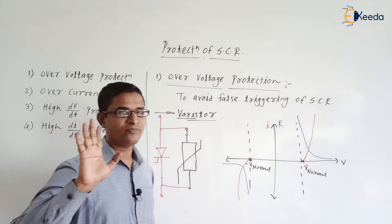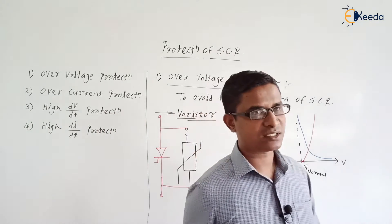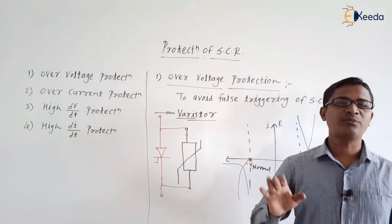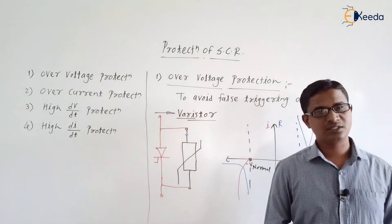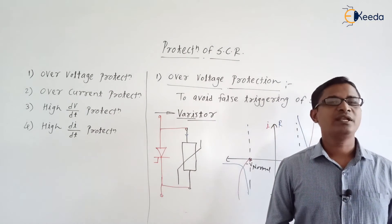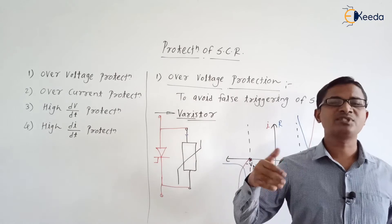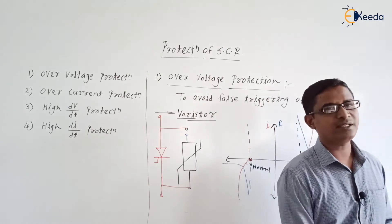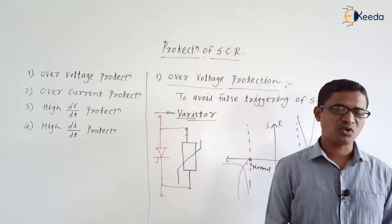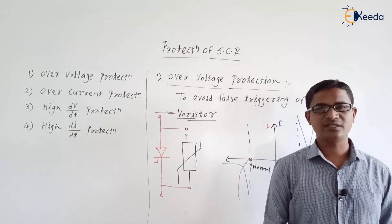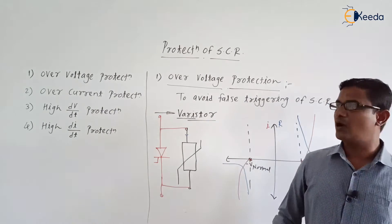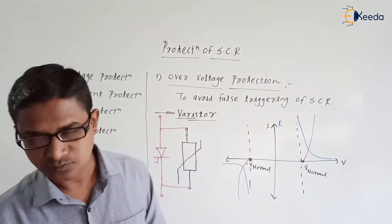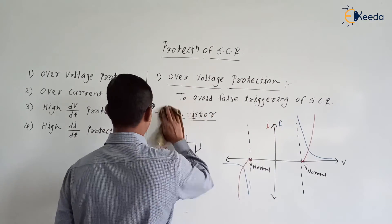In summary, the varistor is a variable resistor that offers a very high resistance during normal working voltage — effectively infinite. When the voltage becomes abnormal, its resistance decreases suddenly by a very large amount. In this way, the varistor protects the SCR against over voltage. Now let us discuss over current protection.